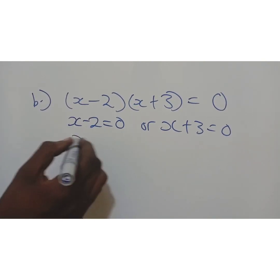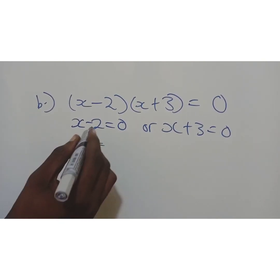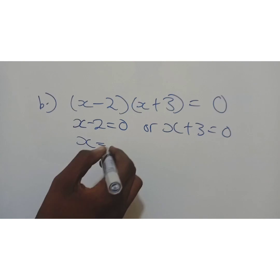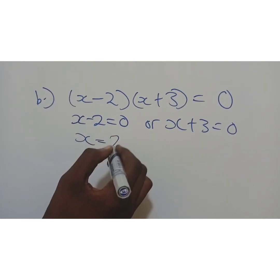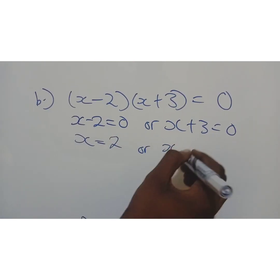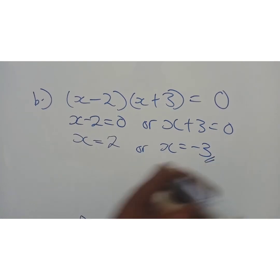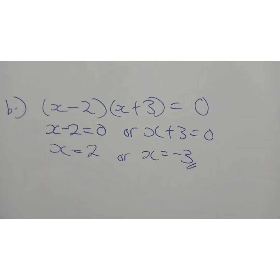So x minus 2, it can't because they are like terms. So we have x is negative, crosses, goes the other side, becomes 2. Or x equals negative 3. Simple.